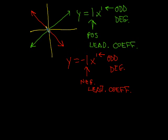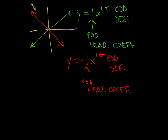Every time we have a polynomial like this, as we go to the left the graph will go up, and as we go to the right the graph will go down. Or, as our x values become negative, the y values will go to positive infinity, and as our x values become positive, our y values will go to negative infinity.